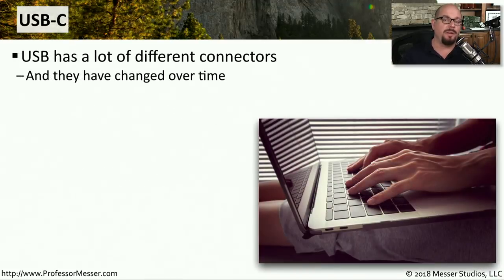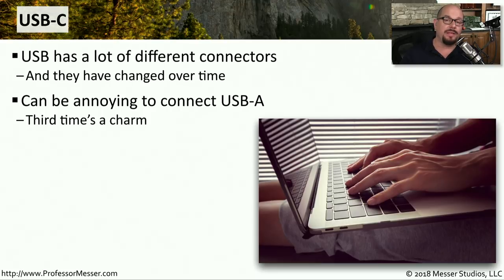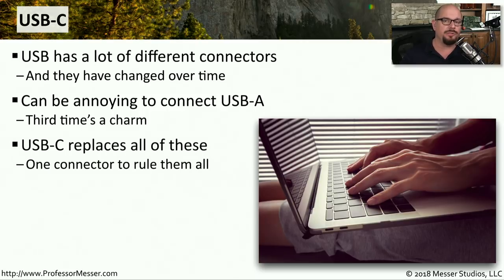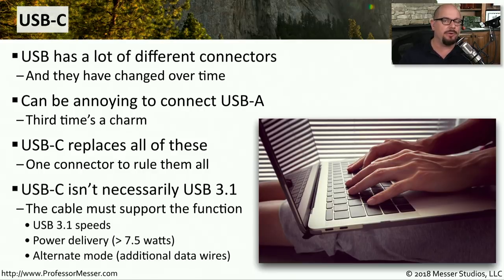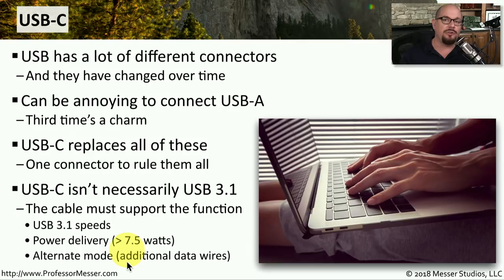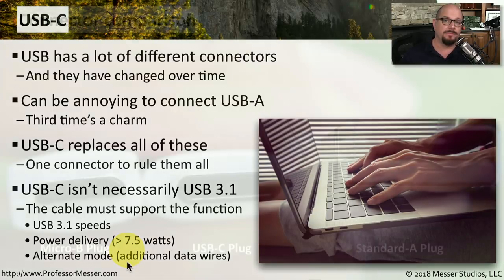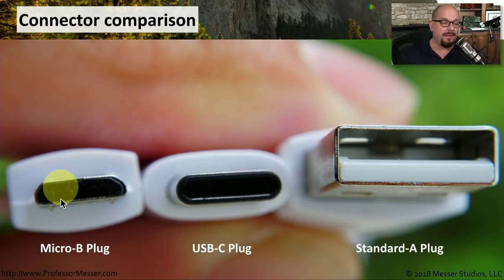USB-C connectors were a bit of a departure from the previous USB connections. With USB-C, we have a connector that doesn't have a top or bottom — you can plug it in either way — and this single USB-C connection can replace all of those other connectors. However, seeing a USB-C connection doesn't necessarily mean it's a USB 3.1 connection. There has to be a set of standards: the cable has to support 3.1 speeds, it has to provide greater than 7.5 watts of power, and it has to support alternate mode, which allows you to send other types of protocols through that same cable. From a size comparison, the USB-C plug is about the same size as the micro B and much smaller than the standard A plug.